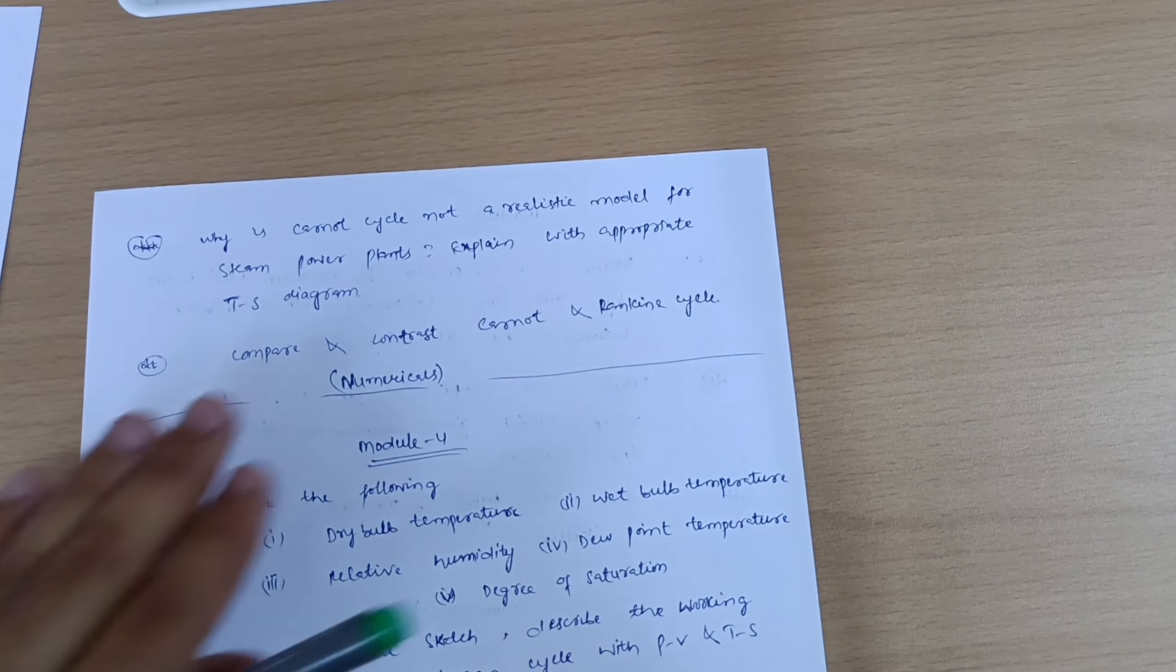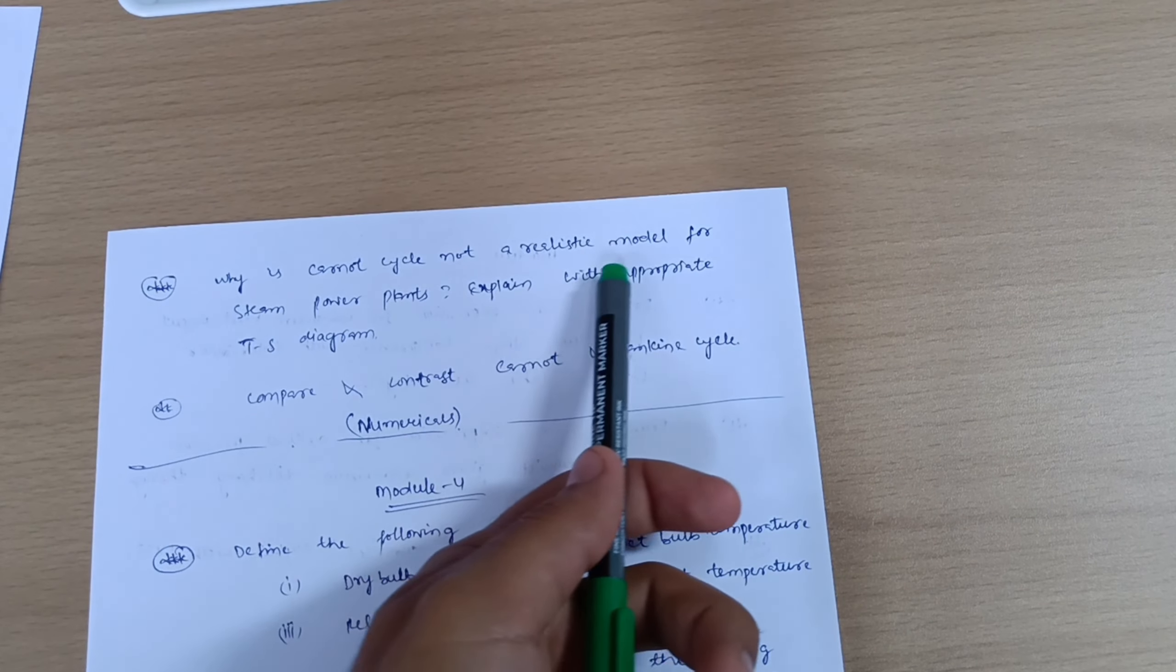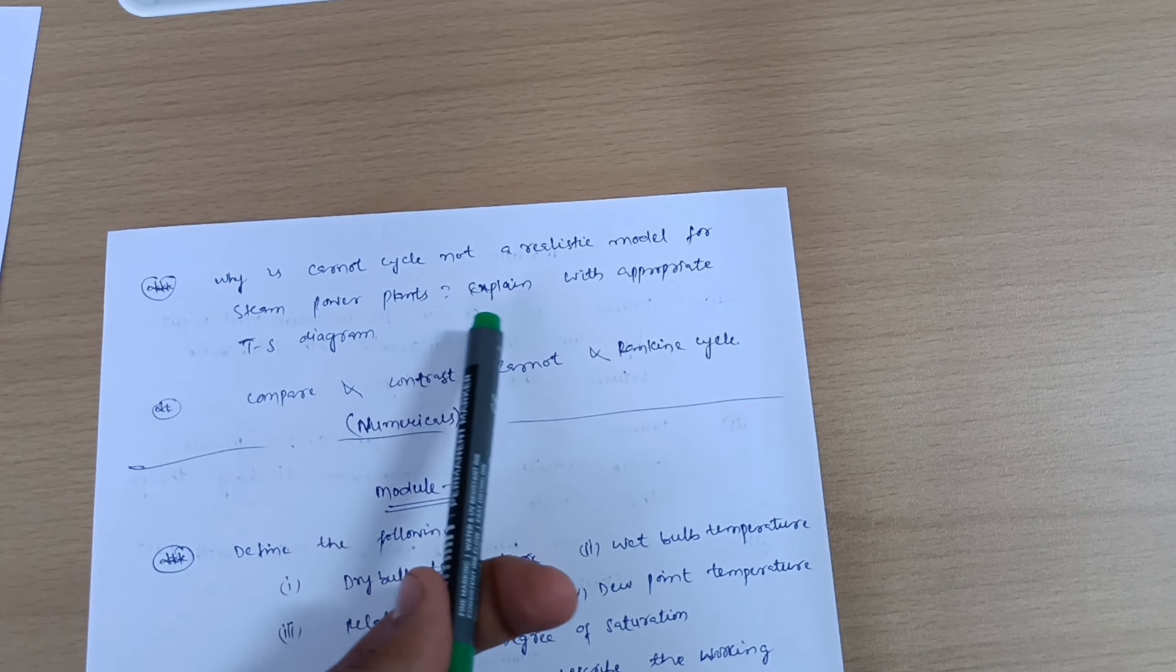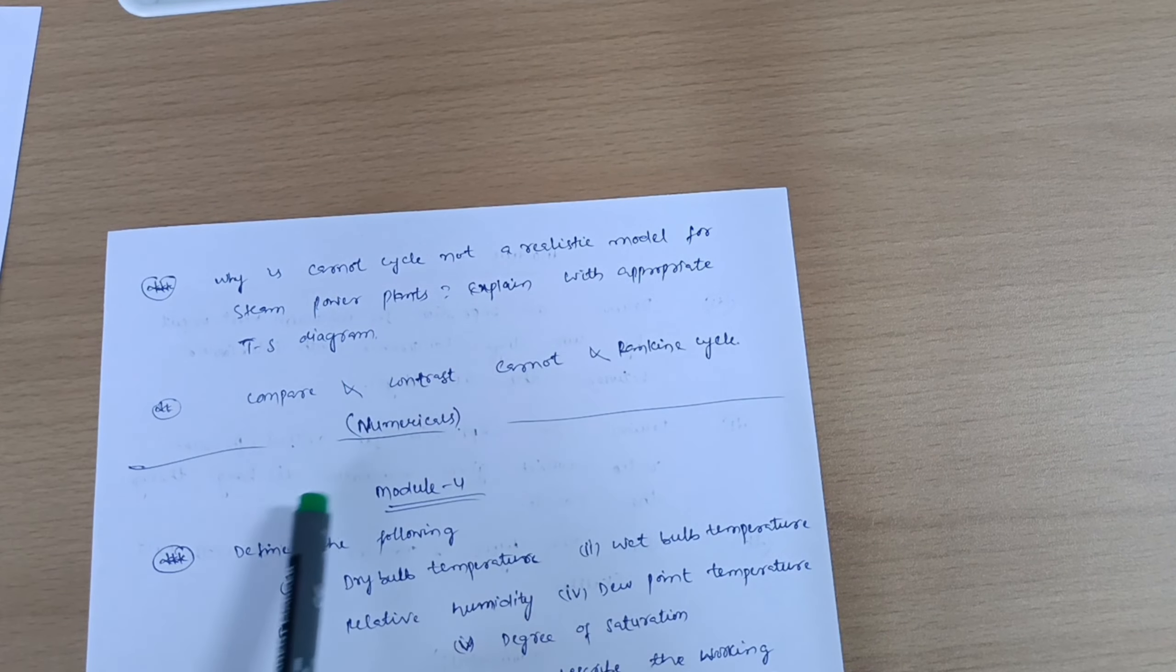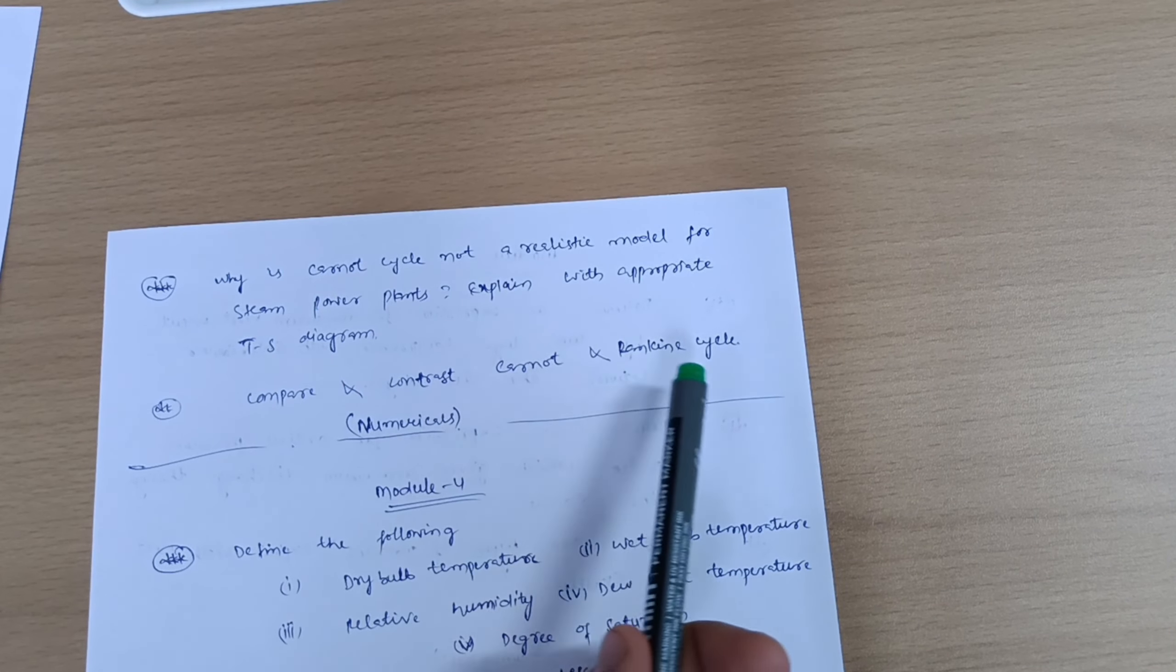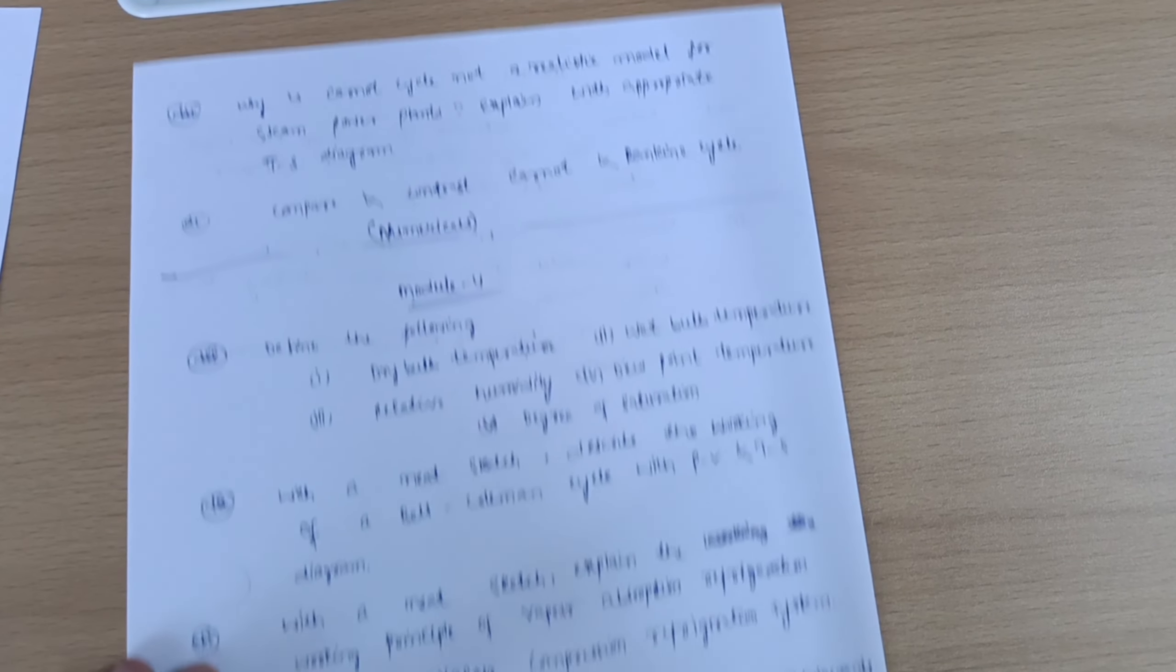These are the three questions. And next two questions from this Module 3: why is Carnot cycle not a realistic model for steam power plants? Explain with appropriate TS diagram. And compare and contrast Carnot and Rankine cycle. This is all about theoretical portion from Module 3.